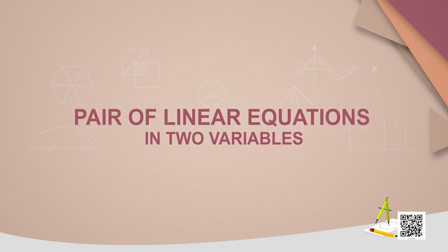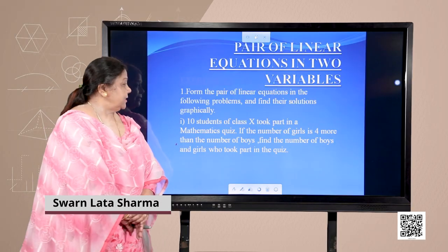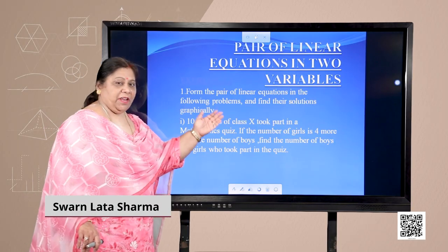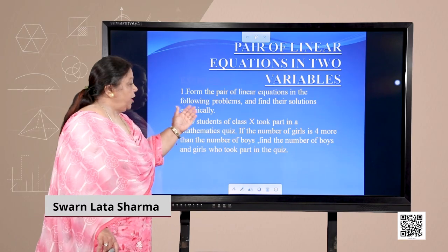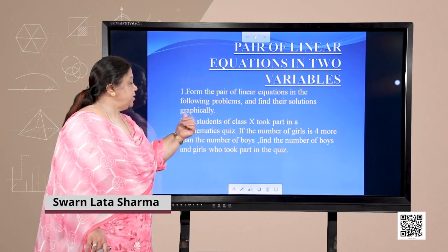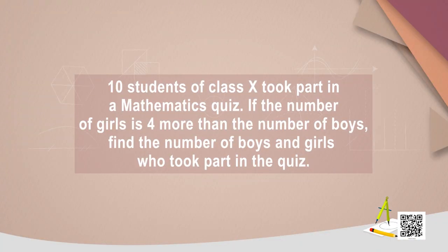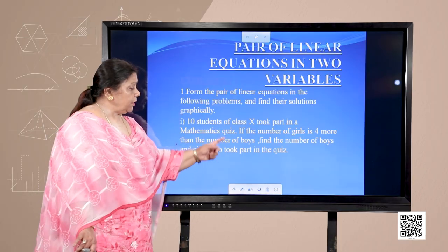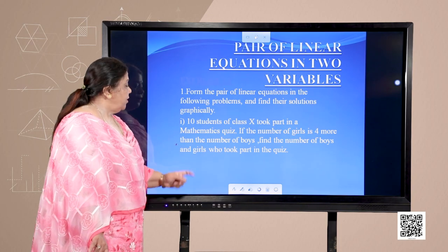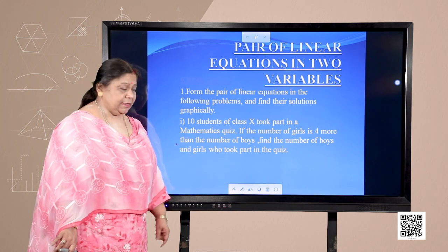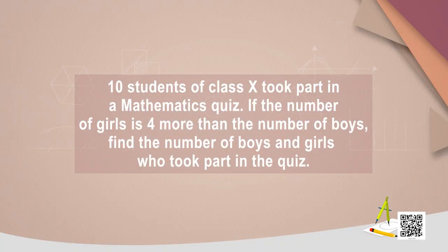Students, let us do the next exercise 3.2. The first question says: form the pair of linear equations in the following problems and find their solutions graphically. The first question is: 10 students of class 10 took part in a mathematics quiz. If the number of girls is 4 more than the number of boys, find the number of boys and girls who took part in the quiz.